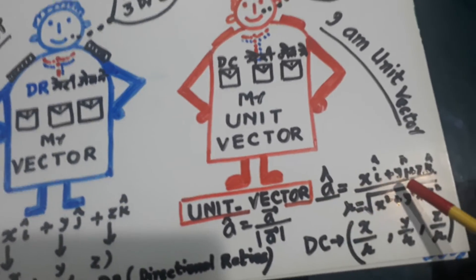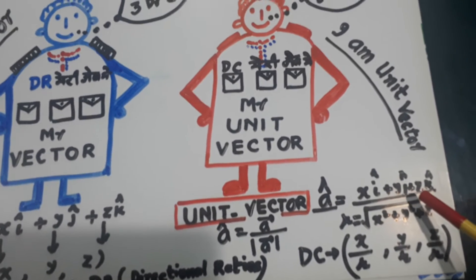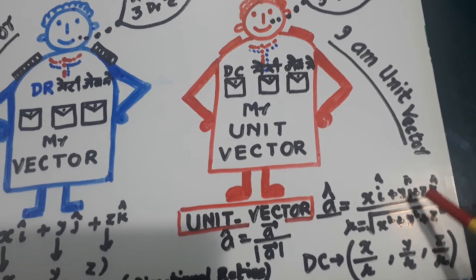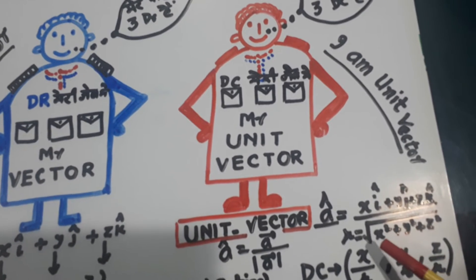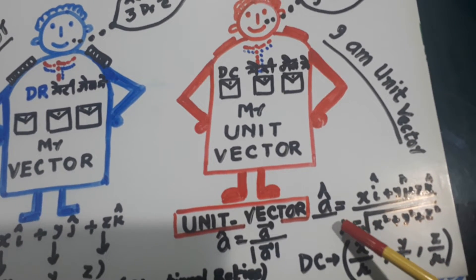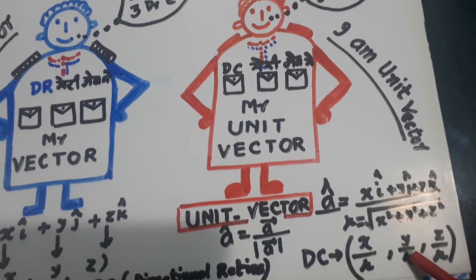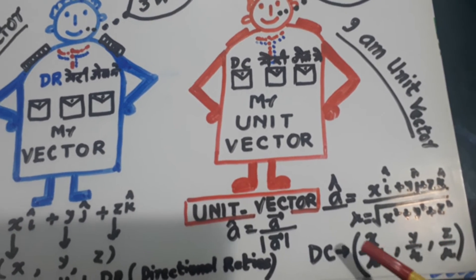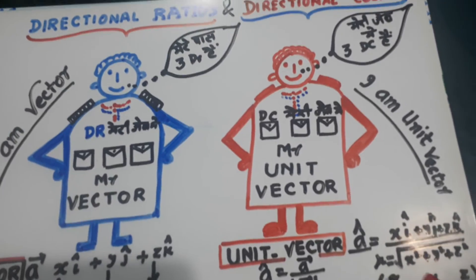So this is the vector. x i cap plus y j cap plus z k cap. And its magnitude is under root x square plus y square plus z square, which is equal to r. So x over r, y over r, z over r, are DCs. So these are three DCs.